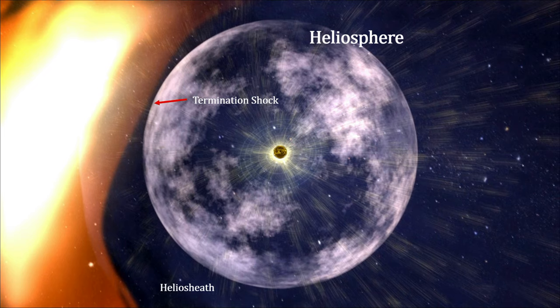The heliosheath is the region between the termination shock and the heliopause, where the solar wind slows and compresses as it interacts with the interstellar medium.